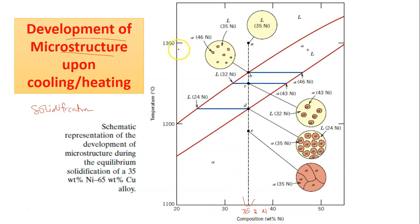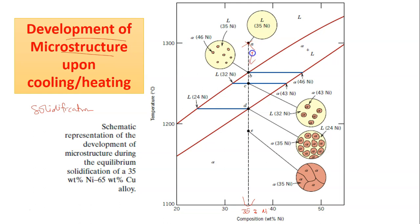We're going to start at temperature 1300°C at point A. As we can see, at point A this system is all in liquid phase. The alloy is completely liquid and it has a microstructure represented by a plain circle. There is no development of any solids.